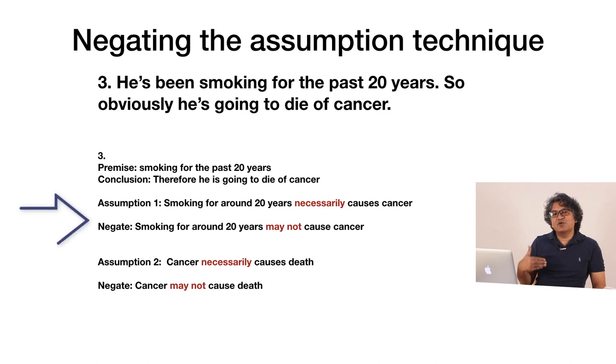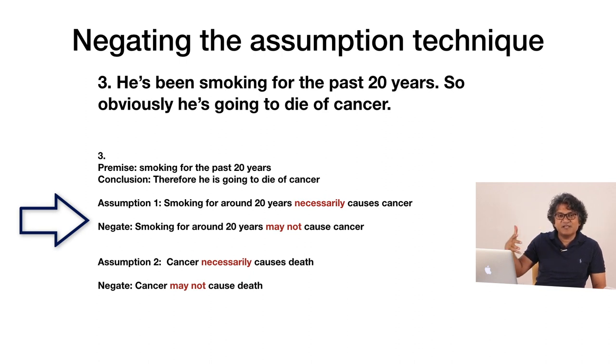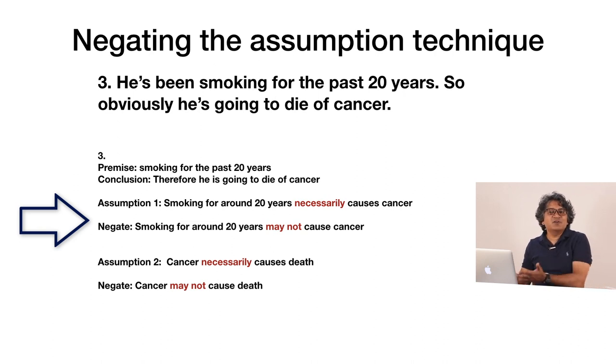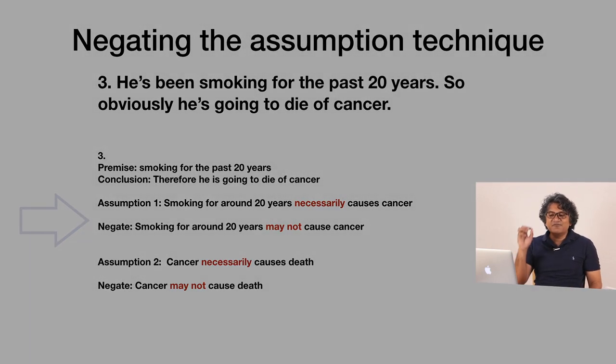Similarly, if smoking for 20 years may not necessarily cause cancer, then he may not even get cancer — forget dying. So again the conclusion falls apart. This is a very nice trick to figure out whether what you think is the assumption is actually correct. You negate it: if the conclusion is harmed, you're right; if the conclusion is not harmed, you're wrong and you need to think about it more.